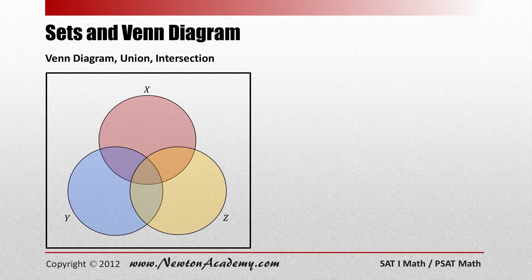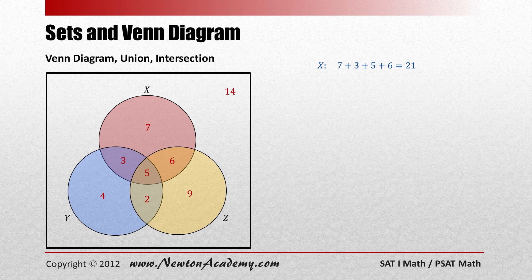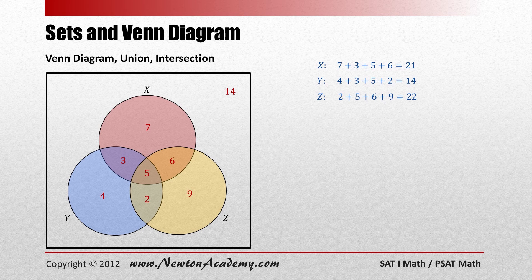Suppose we have a total of 50 students, and numbers are assigned to the different parts of the circles. The number 14 represents students who do not belong to any of the three sets. Set X has a total of 7 plus 3 plus 5 plus 6, which is 21 students — all numbers inside the red circle are counted. You can do the same for set Y and set Z.